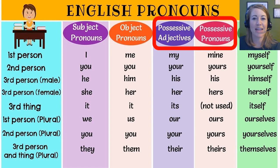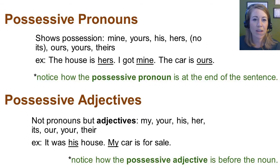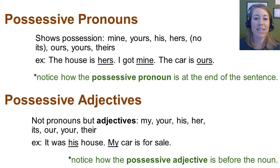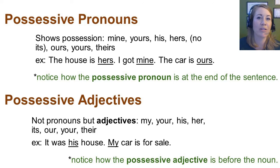Now let's look at possessive pronouns. I've put a block around possessive adjectives and possessive pronouns for a reason — because one set is a pronoun and the other is an adjective. Possessive pronouns show possession: mine, yours, his, hers, ours, yours, theirs. Example sentences: The house is hers. I got mine. The car is ours. Notice how the possessive pronoun is at the end of the sentence. This is a lot like the object pronoun at the end of the sentence, so our heuristics help you narrow down — you're obviously not dealing with a subject pronoun here.